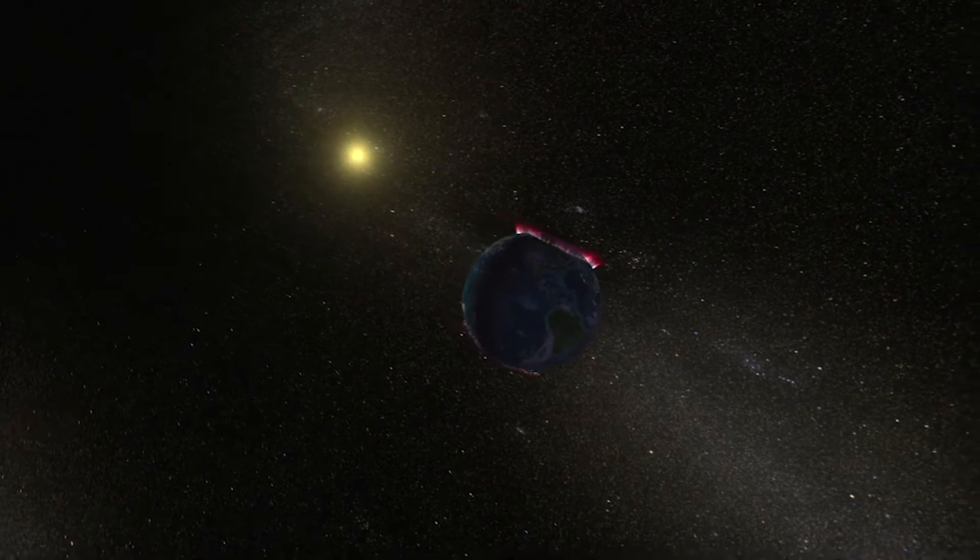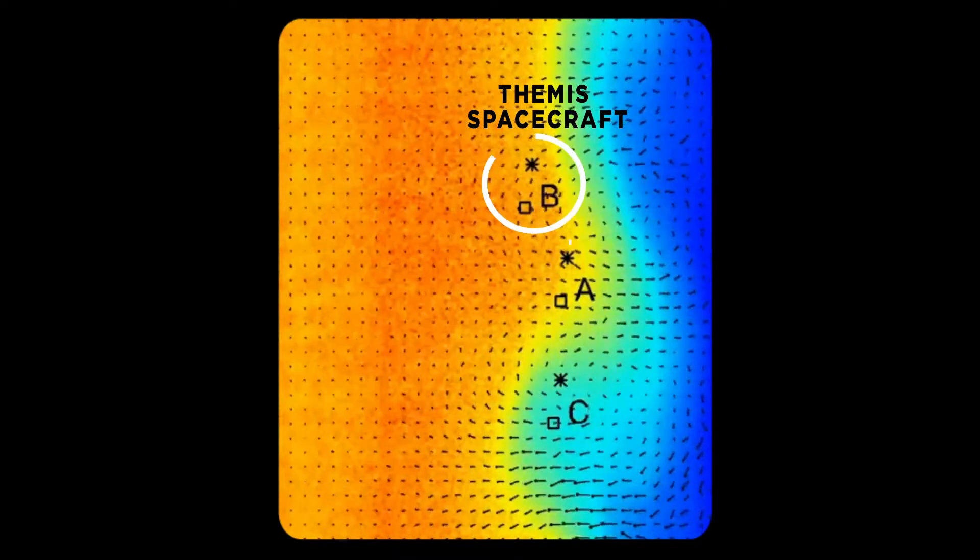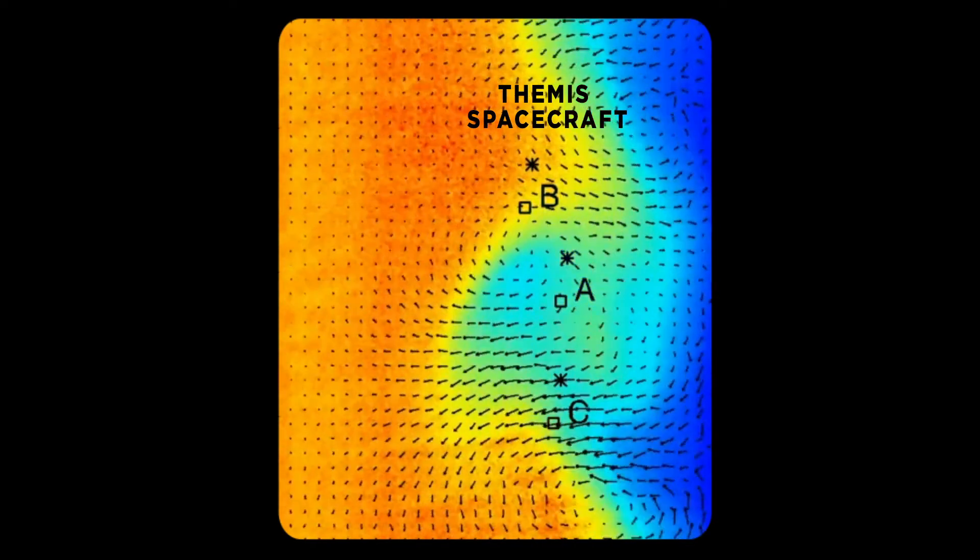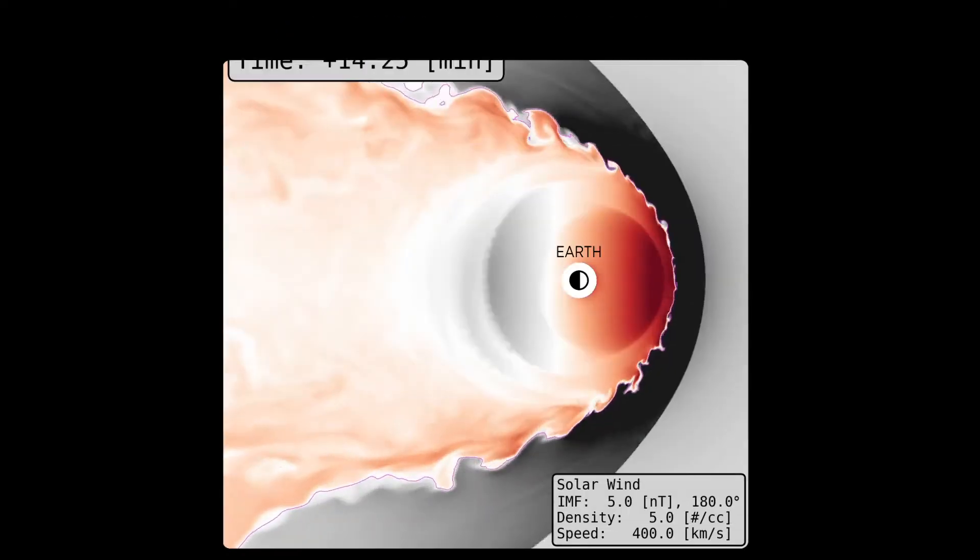Three of the Themis spacecraft study near-Earth phenomena that triggers auroras. Scientists then combined Themis observations with ground measurements and powerful computer models. This is the result.